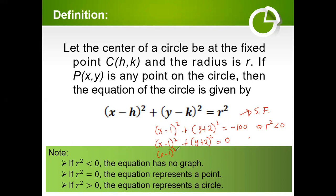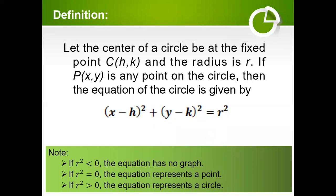Now if (x minus 1)² plus (y plus 2)² equals 100, r² equals 100 and 100 is greater than 0, which means the equation represents a circle. So again: if r² is less than 0, it has no graph; if r² equals 0, it represents a point — a degenerate case of a conic section; if r² is greater than 0, the equation represents a circle.